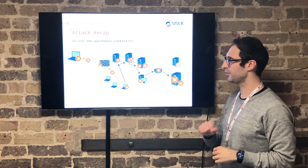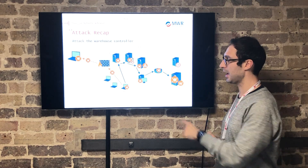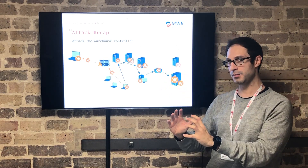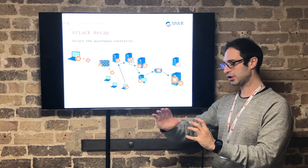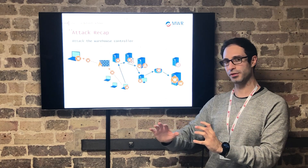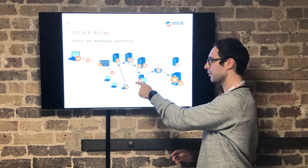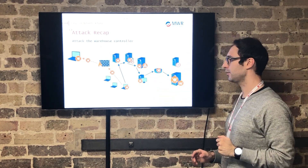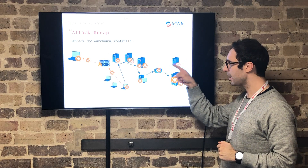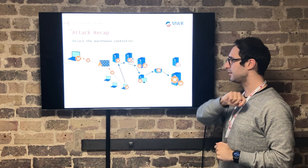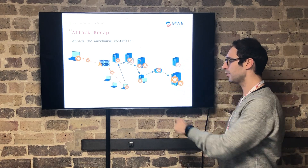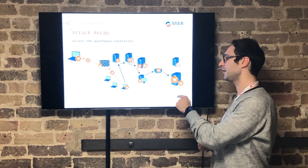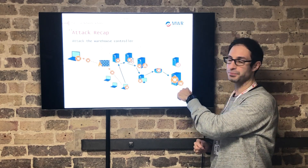The target network was segregated from the corporate network using a firewall. From their position, they had to hack into the firewall by finding vulnerabilities, changing the rules so the firewall would allow traffic into the segregated network, and then find vulnerabilities inside that separate network so they could finally hack their actual target.